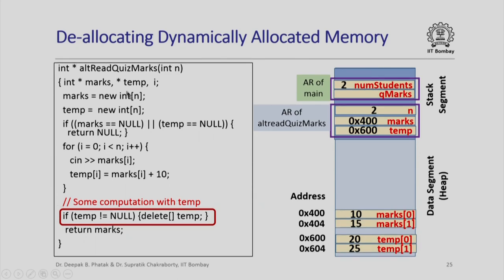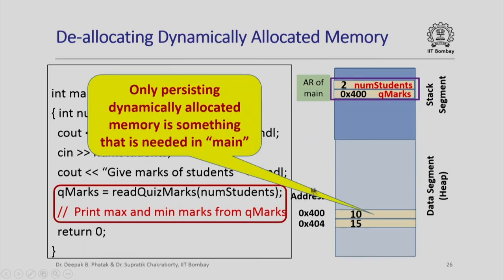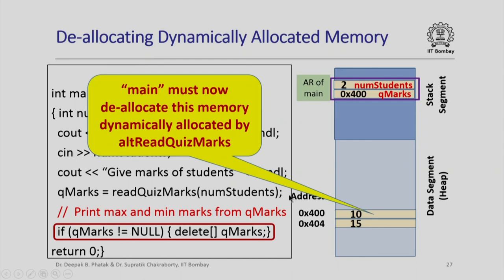Here is how you deallocate dynamically allocated memory in `alt_read_quiz_marks`: check whether `temp` is not equal to null and then `delete[] temp`. A good programming practice is that before you use `delete` you should always check that the pointer is not equal to null, because deallocating memory at the null address will crash your program. So that removes the dynamically allocated array `temp`. When you return to main, only the necessary dynamically allocated memory persists, and it is main's responsibility to deallocate it — since `alt_read_quiz_marks` didn't, main must do so.